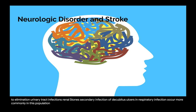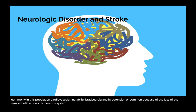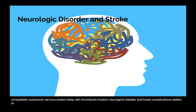Bradycardia and hypotension are common because of the loss of the sympathetic autonomic nervous system. Deep vein thrombosis is another potentially serious complication. Complications related to dysfunctions in emptying bladder and bowels require planning to avoid the complications of autonomic dysreflexia.